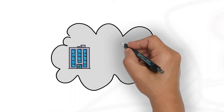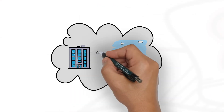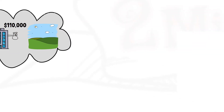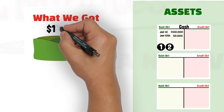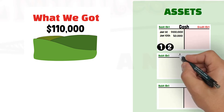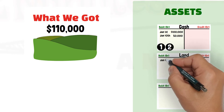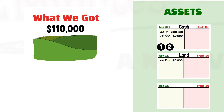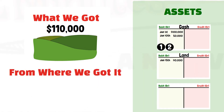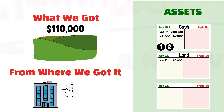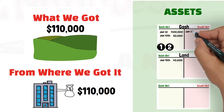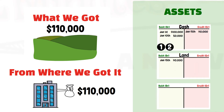Assume that the business bought a piece of land for 110,000 in cash. The resource that the business got is the piece of land, and that is recorded by increasing or debiting the land account by 110,000. From where did the business get that piece of land? It is the business that paid for the land from its own cash. So there is a decrease in cash, and that decrease is recorded by crediting the cash account by 110,000.